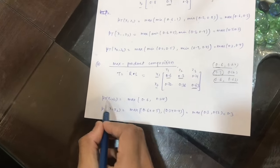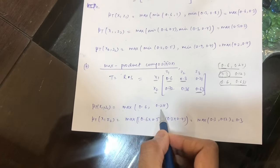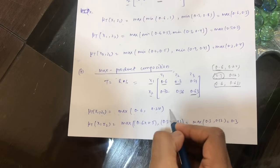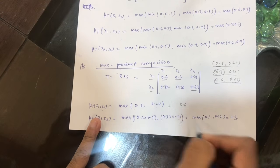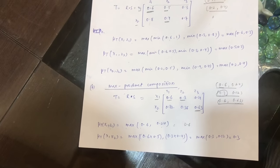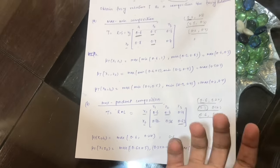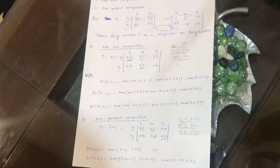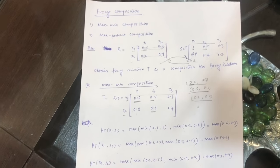In notation, we write μ_T(x1, z1) = max(0.6, 0.24) = 0.6, and similarly for all other entries. That is all about max-min composition and max-product composition. If you like the video, please like, subscribe, and share. Thank you.